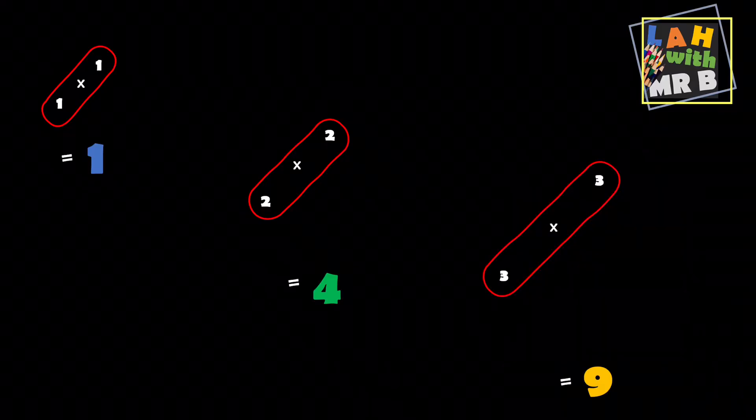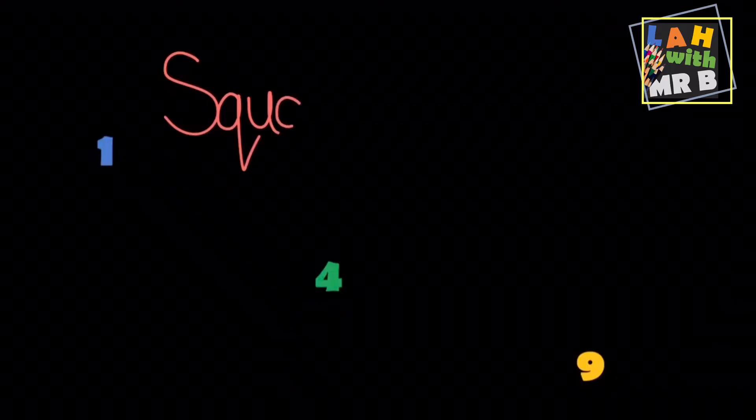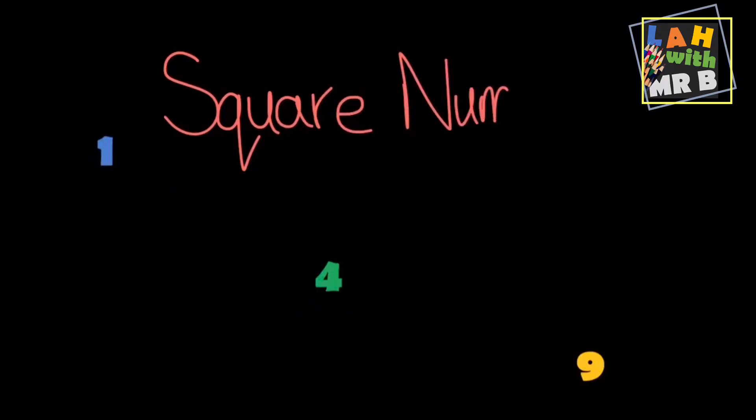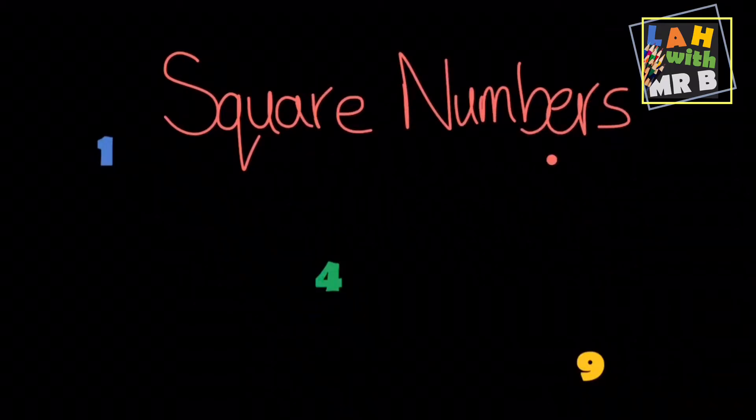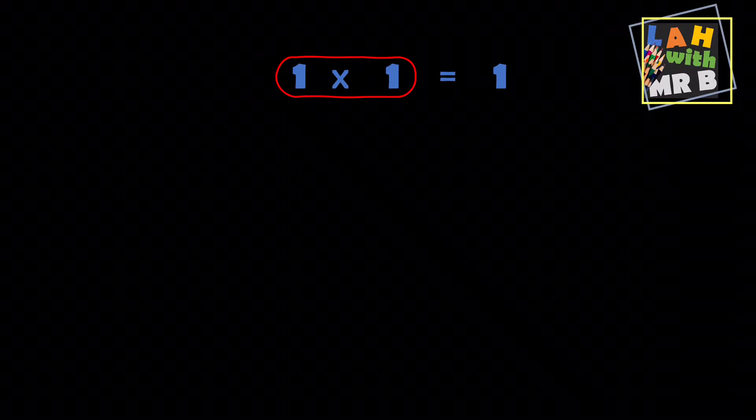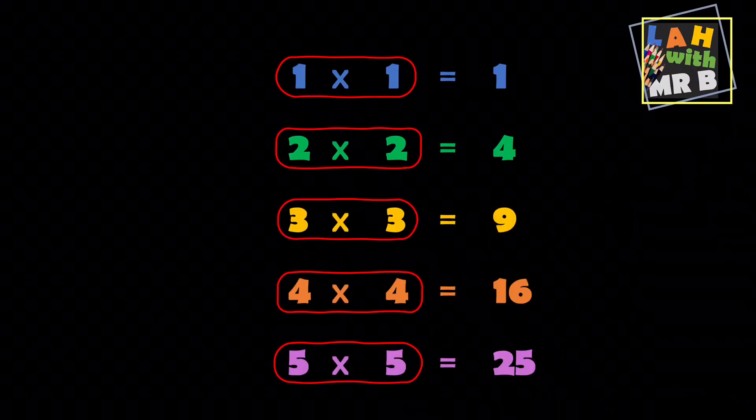One, four and nine are squared numbers. In fact, anytime you multiply a number by itself you get a squared number. So one times one is one, two times two is four, three times three is nine, four times four is sixteen, five times five is twenty-five and so on. You can keep on going up and up and up.